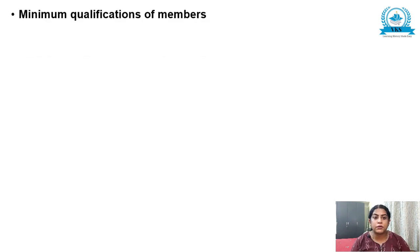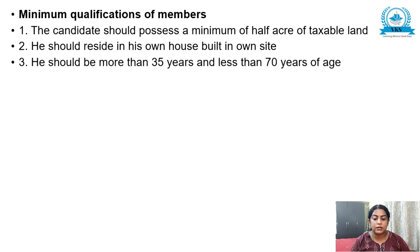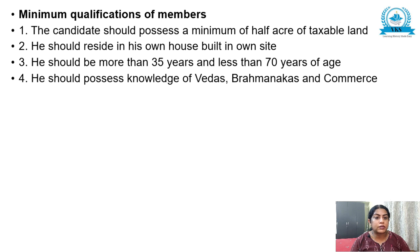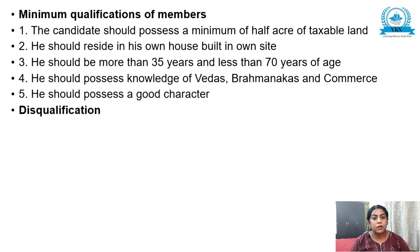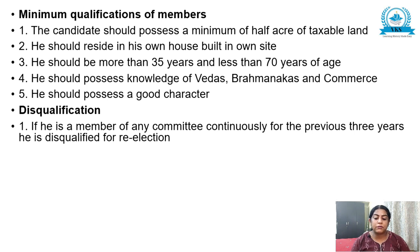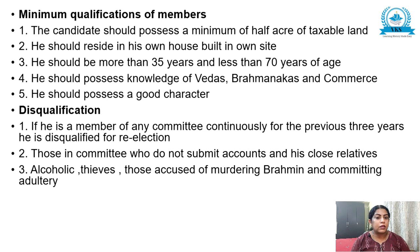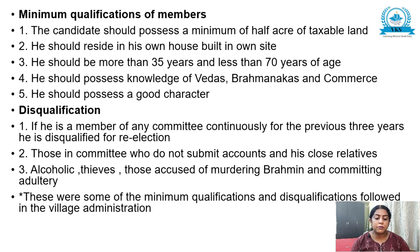There were minimum qualifications and disqualifications to become members of the village committee. Qualifications: the candidate should possess a minimum of half an acre of taxable land, reside in his own house, be more than 35 and less than 70 years of age, possess knowledge of Vedas, Brahmanakas and commerce, and have a good character. Disqualifications: if a member served on any committee continuously for the previous three years, he is disqualified for re-election. Those who do not submit accounts and their close relatives are also disqualified. Alcoholics, thieves, those accused of murdering a Brahmin or committing adultery were also disqualified.